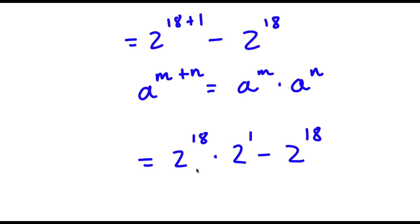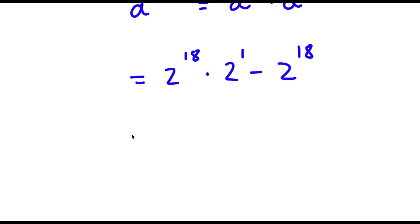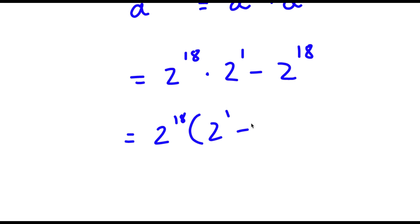Now I'm going to go ahead and factor out 2 to the power of 18 from this. So now I have 2 to the power of 18 times — 2 to the power of 18 times 2 to the power of 1 divided by 2 to the power of 18 is simply just 2 to the power of 1. And this minus 2 to the power of 18 divided by 2 to the power of 18 is simply just 1.